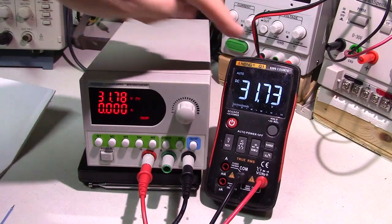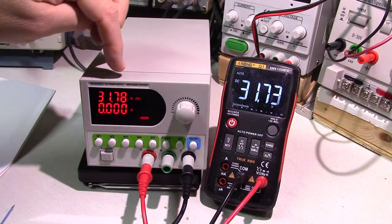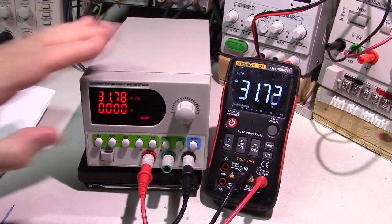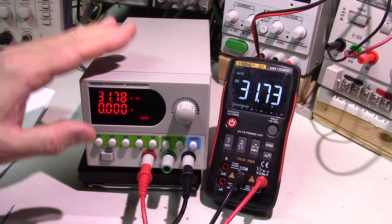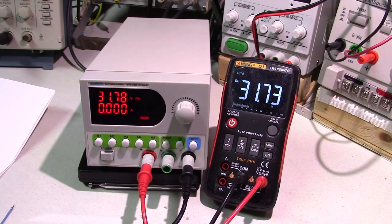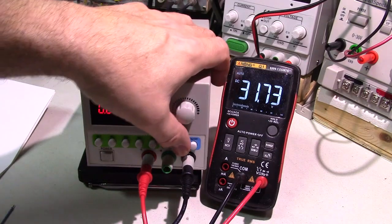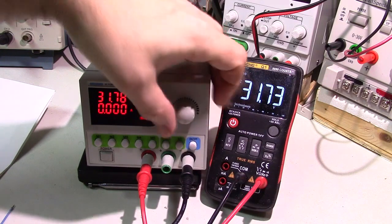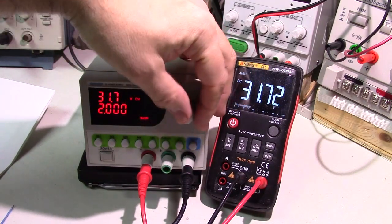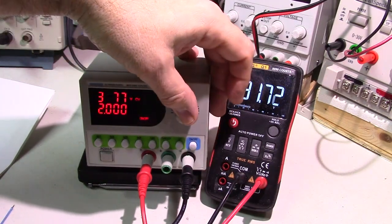Now it shows 31.78, 31.73 volts. I believe that the meter is more accurate even than that, so this is the reference standard because Matrix Technology accurately calibrates this before they ship it. To change the voltage, you hit the voltage button right there.